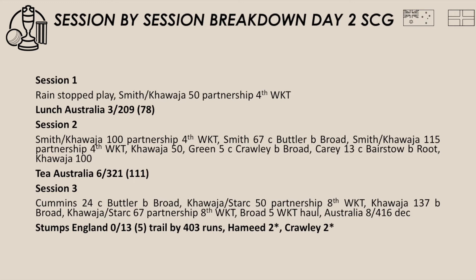Magnificent century on return for Usman Khawaja — I thought he was the standout today. I thought Steve Smith batted well for his 67 off 141 balls. He would have been disappointed to get out on 67 to Stuart Broad, nicking one behind to Jos Buttler, and disappointed not to get the century. But he had a magnificent partnership with Khawaja of 115 for the fourth wicket which pretty much set up Australia for the rest of the day. Australia also had some great lower order partnerships, which were very crucial in terms of Australia getting to that 416 score.